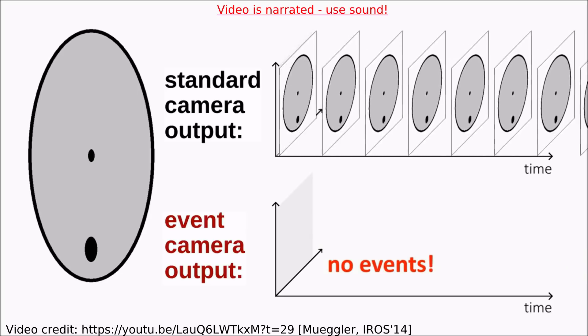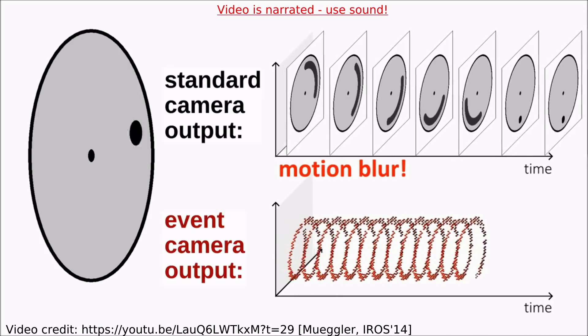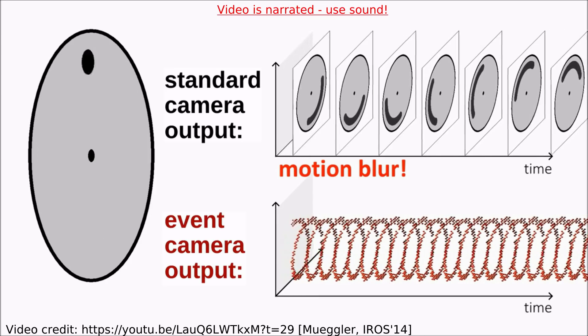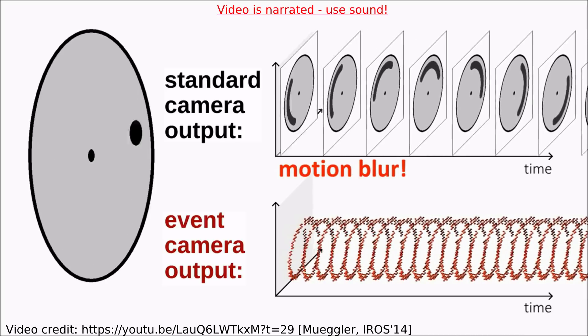If there is no motion, there are no events. Conversely, if motion is very fast, they do not suffer from motion blur. This is because event cameras sample the scene at exactly the rate of the scene dynamics, making them especially useful for capturing motion.